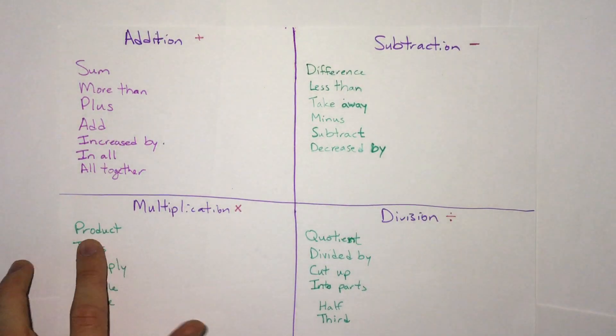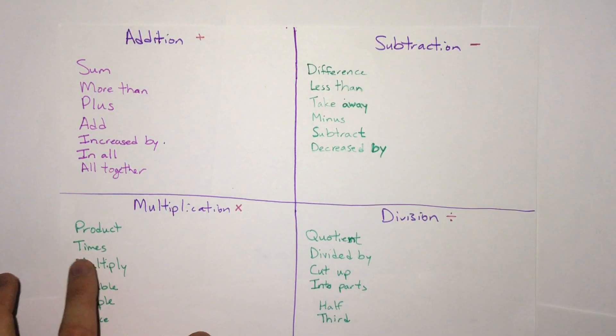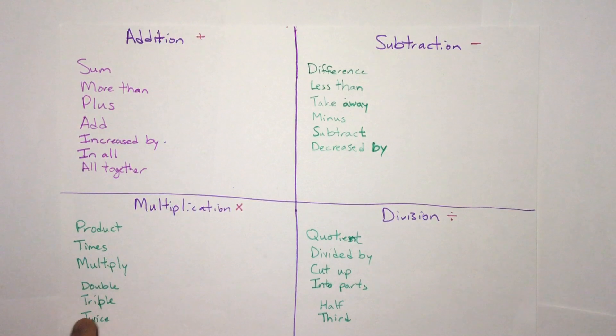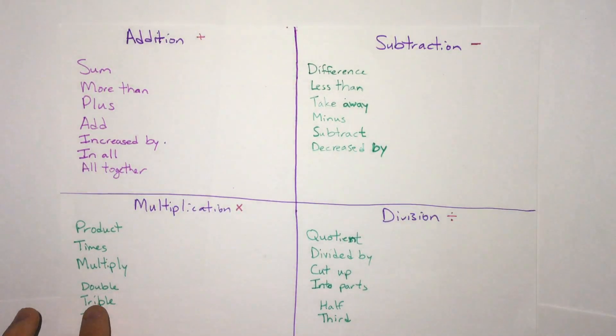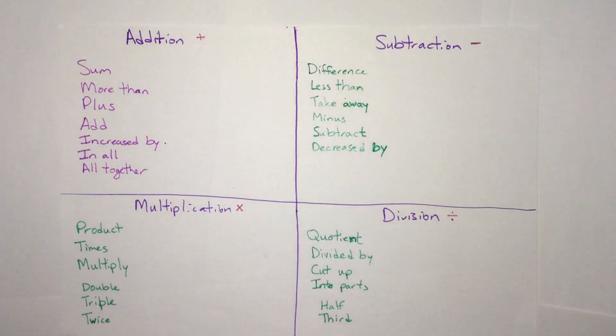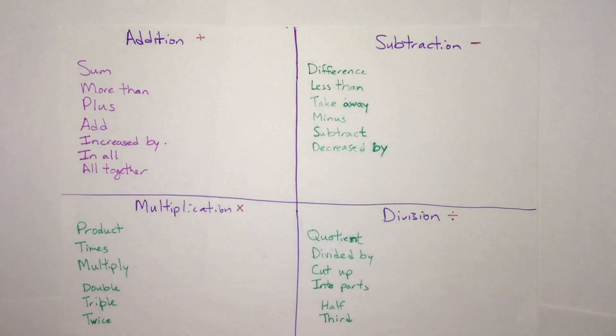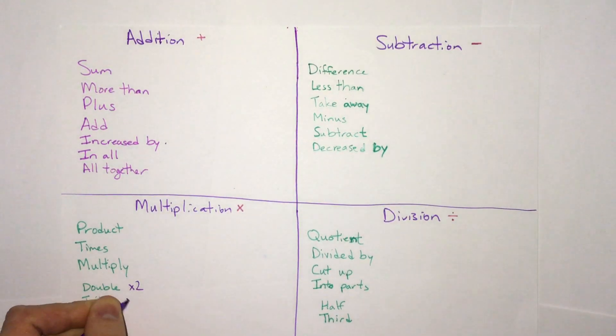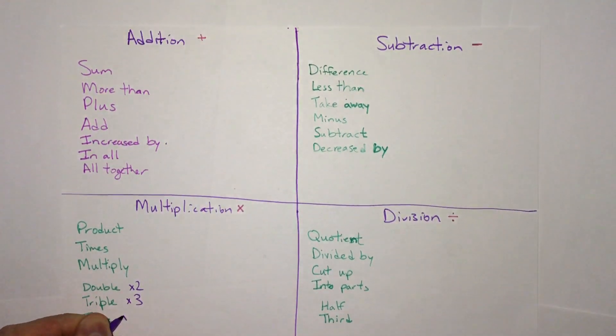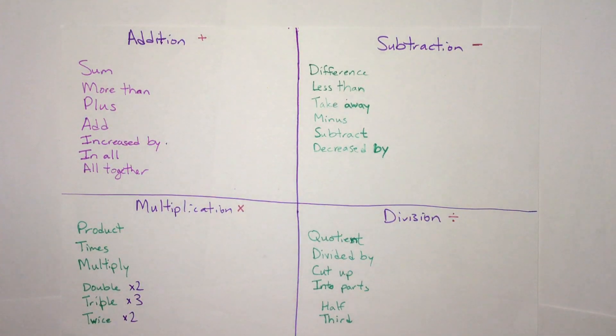Multiplication. The main word we often see is product, but we also see times, multiply, and some specific ones. Double, if we see like double that would mean times two, triple times three, twice times two, something like that.